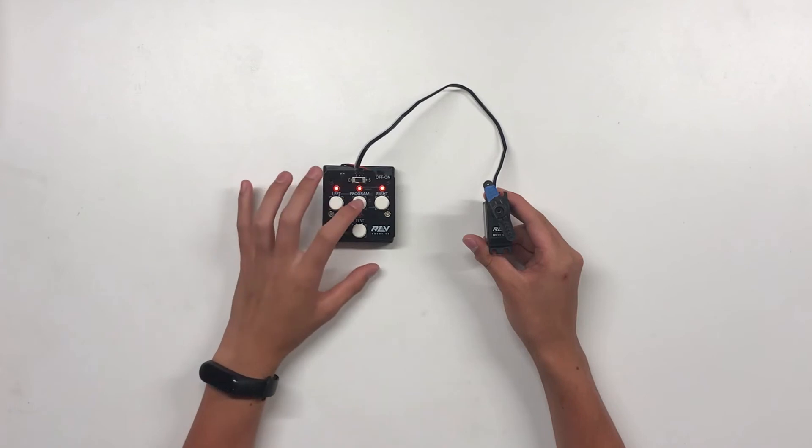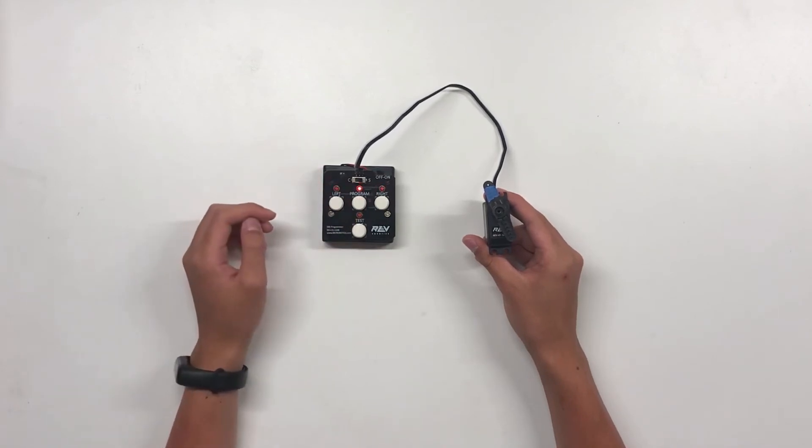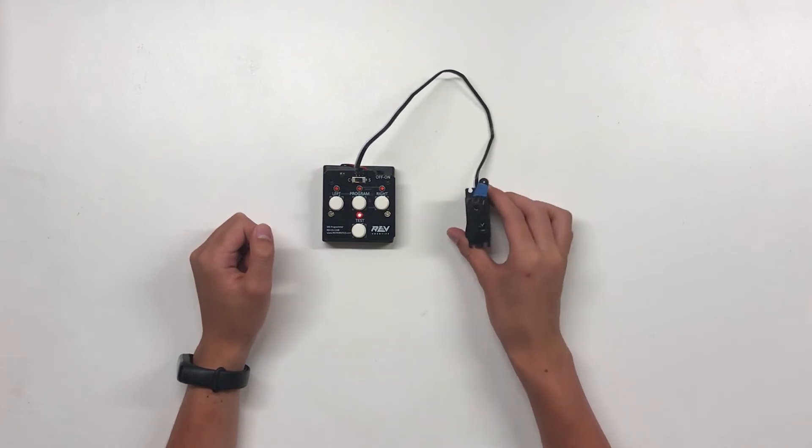To save the new positions, hit the program button once more. You can then use the test button to confirm whether your positions are correct and are good to go.